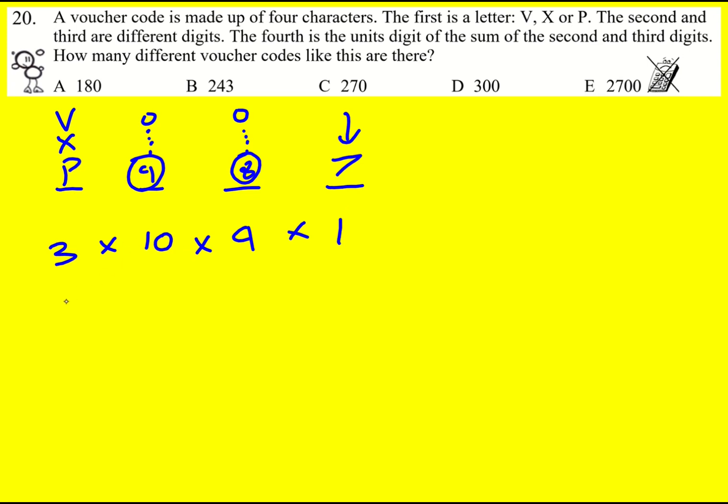Ultimately we'll just do 3 times 10, 30 times 9. So the answer is 270.